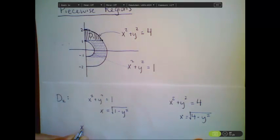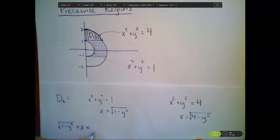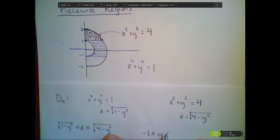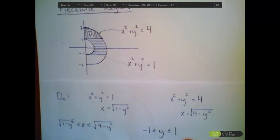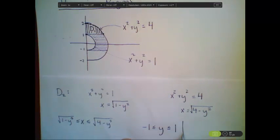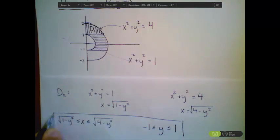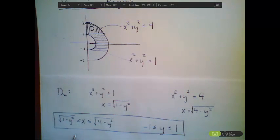So as a final product, I could say that my x's are bounded from square root of 1 minus y squared to square root of 4 minus y squared. And my y values are going from negative 1 to 1. And if I were to set up an integral, it would mean that my x portion would have to be on the interior of the integral, and the y portion would have to be on the exterior, because we need constants on the outside.